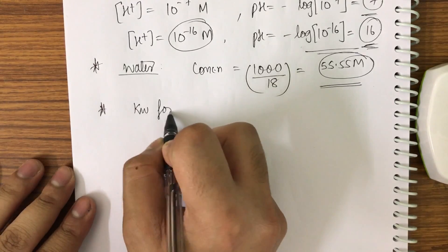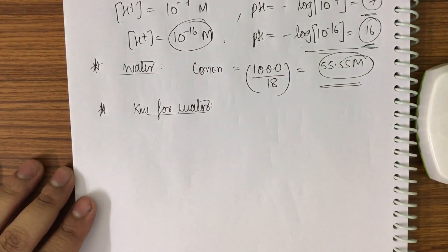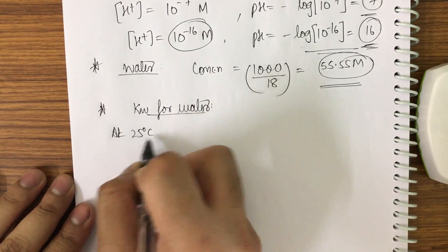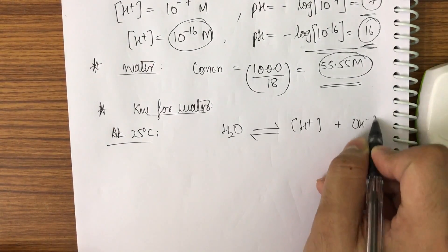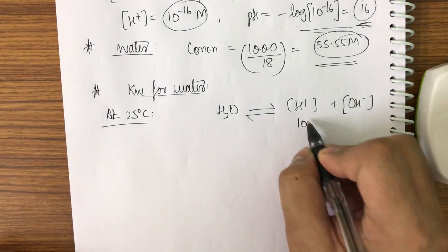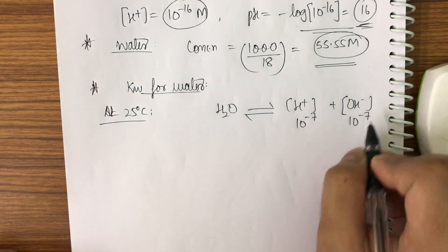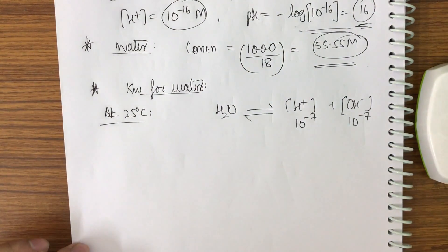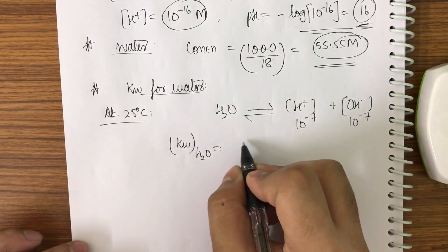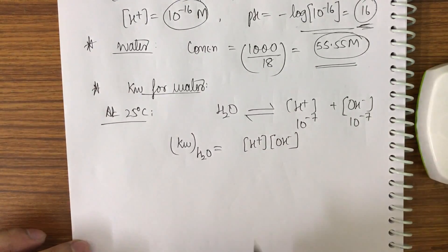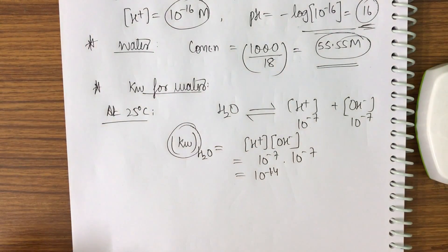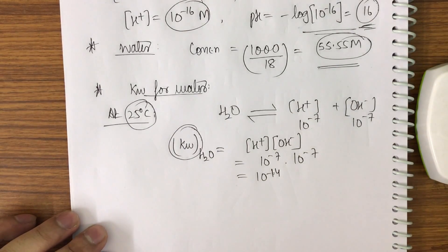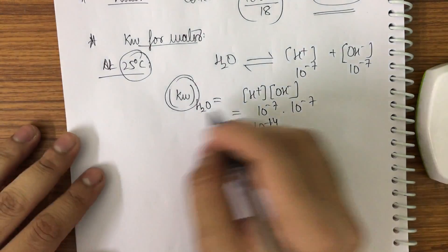Next I will find Kw for water, which is the equilibrium constant. At 25°C (STP conditions), H₂O dissociates into H⁺ plus OH⁻. We take the concentration of H⁺ to be 10⁻⁷ and OH⁻ to be 10⁻⁷ at 25°C. So Kw equals H⁺ times OH⁻, which gives 10⁻⁷ × 10⁻⁷ = 10⁻¹⁴. Remember, the equilibrium constant only depends on temperature, not on concentration or pressure.